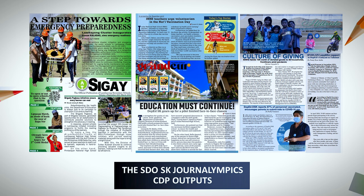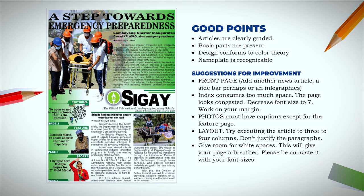The first entry we will give constructive criticism to is the green one. The good points of this output are that articles are clearly graded — you can clearly see from the headlines which news is the most important. As I said earlier, articles covering bigger space and receiving bigger headlines are deemed special and important. In this case, 'A Step Towards Emergency Preparedness' appears to be identified as the most important story. The basic parts are all there: the nameplate, pictures, photo, body text, and index.